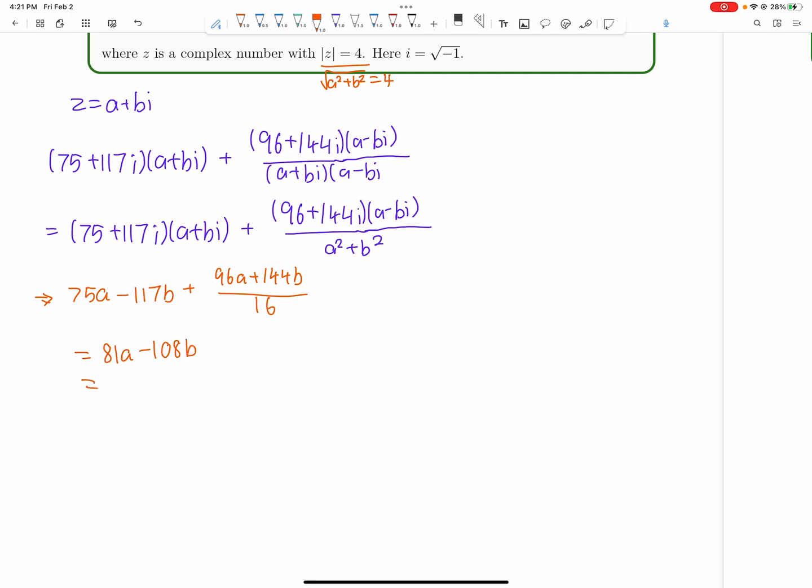And clearly we can just factor out a 27 from here, so 3a minus 4b. So now the problem is basically saying maximize this quantity given that we have a squared plus b squared equals 16.